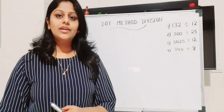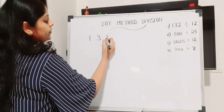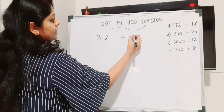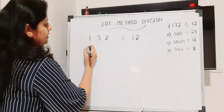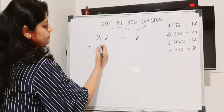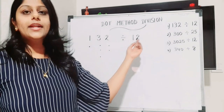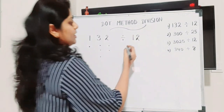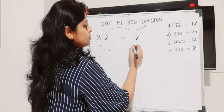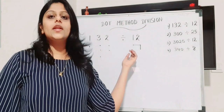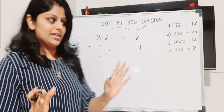Let's do a direct question which is very easy. The first question is 132 divided by 12. For 1 we draw one dot, for 3 we draw three dots, and for 2 we draw two dots. Since the divisor is 12, we group one dot from the first column and two dots from the second column together.